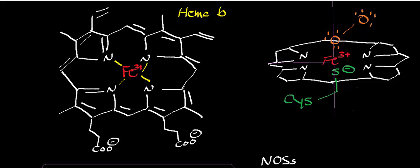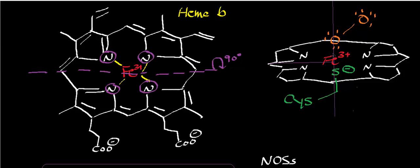If we take an axis right through the iron and rotate it 90 degrees, we can look at the axial positions going in the vertical direction. From the bottom, there's a cysteine residue thiolate — a cysteine in the deprotonated state — chelating the ferric iron. From the top, that's where the molecular oxygen comes in and binds, coming in at some angle with respect to the planar porphyrin ring.